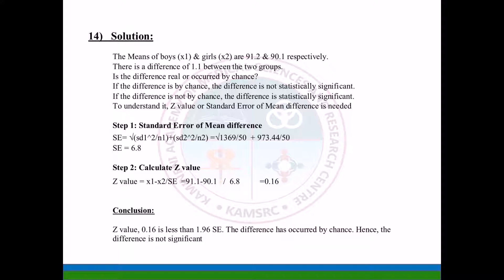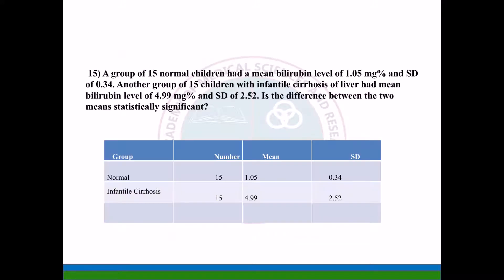Z = (91.2 - 90.1) / 6.8 = 0.16. In conclusion, the z value of 0.16 is less than 1.96 SE. The difference has occurred by chance, hence the difference is not significant. This is the solution to the 14th question. The 15th question: a group of 15 normal children had a mean bilirubin level of 1.05 mg percent and SD of 0.34.